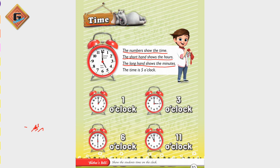Now you can see this clock. The time is 5 o'clock. Because when the big hand is on number 12 and the small hand is on any number, that is the o'clock. So this clock shows — what is the time? 5 o'clock.